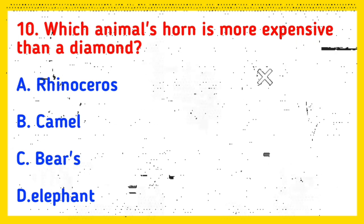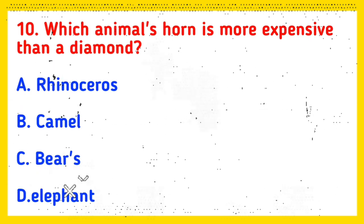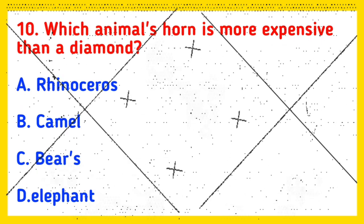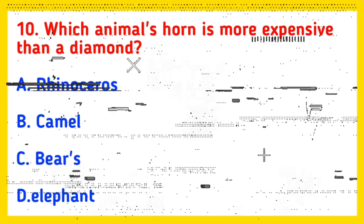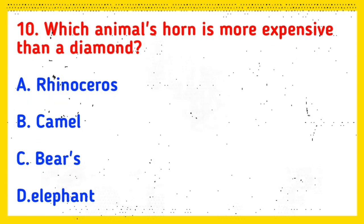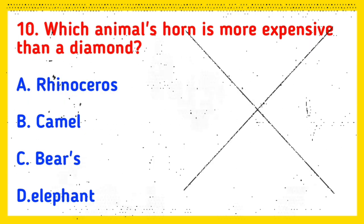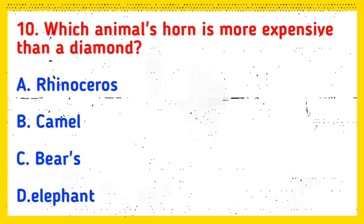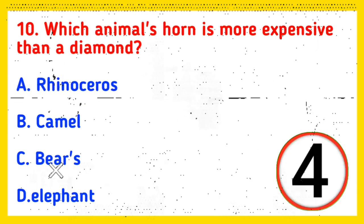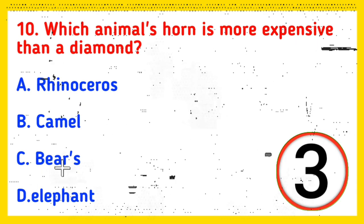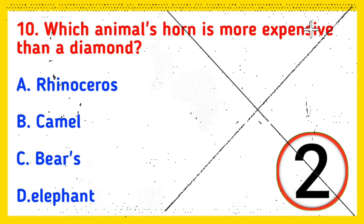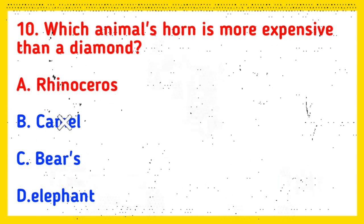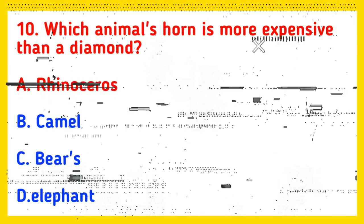Q10: Which animal's horn is more expensive than a diamond? Option A: Rhinoceros, Option B: Camel, Option C: Bear, Option D: Elephant. And the correct answer is Option A, Rhinoceros.